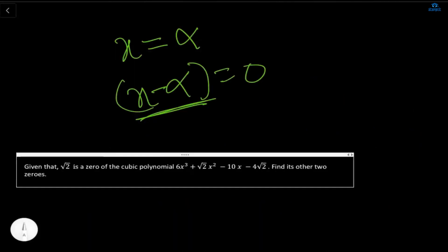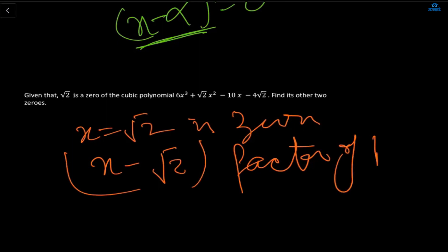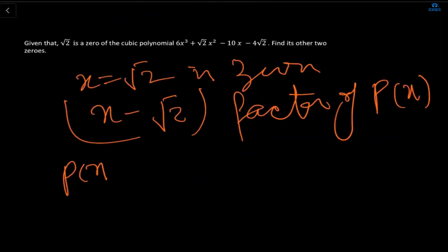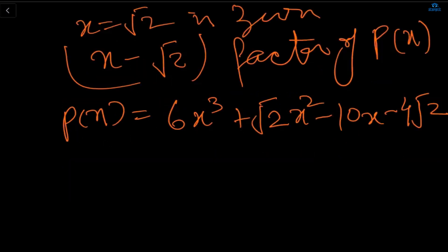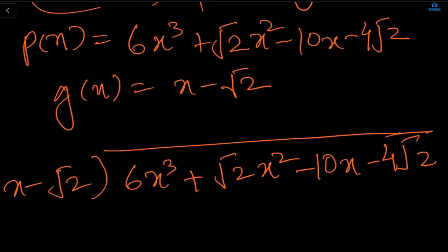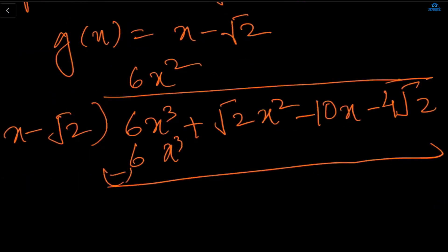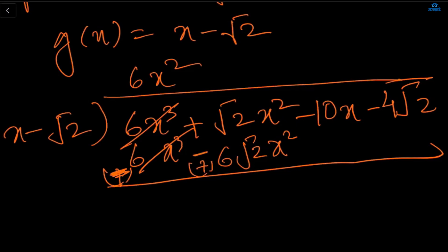Given root 2 is the zero of the polynomial, x equals root 2, so x minus root 2 is a factor of px. Here px = 6x³ + √2x² - 10x - 4√2. We are going to divide px by gx = x - √2. Using the division algorithm, the first term of the quotient is 6x². We alter the sign so these terms cancel. The next step brings 6√2x².